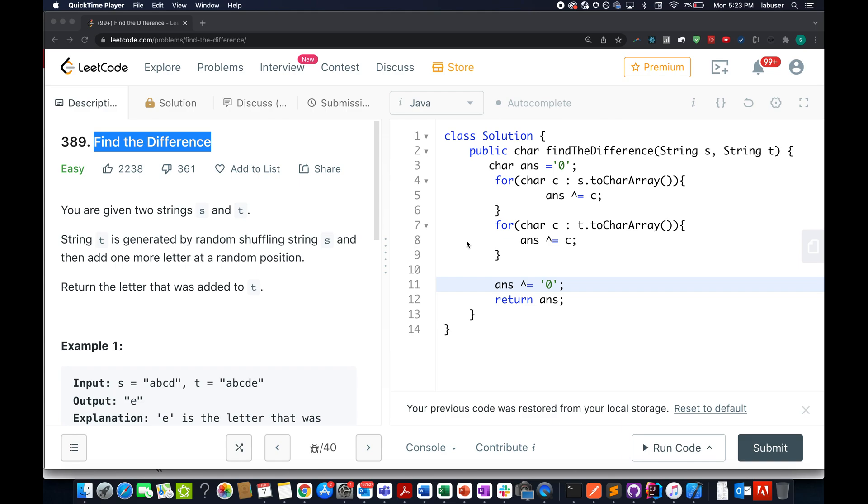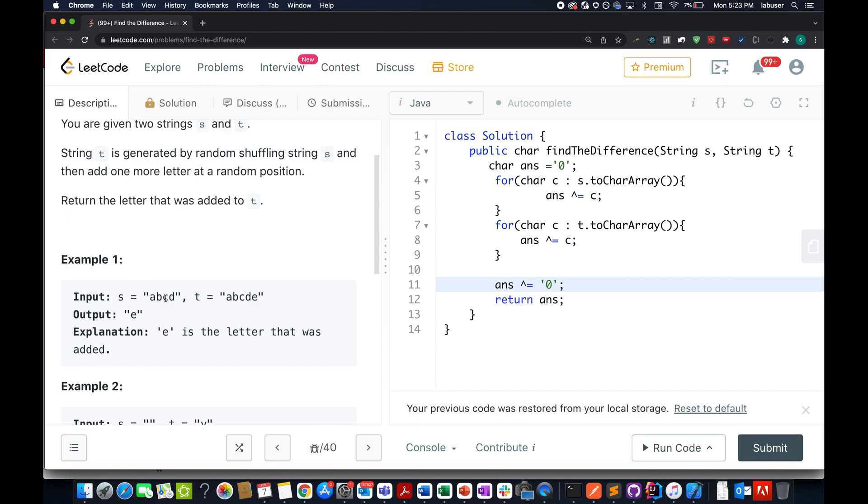The question that we have today is Find the Difference. In this question we are given two strings S and T, and we are told that the T string differs from the S string by only one character unit. We need to identify that additional character that is present in T which is missing from S. For example, we are given S as ABCD, we are given T as ABCDE, and E is an additional character present in T which is missing from S. We need to return E as the answer.